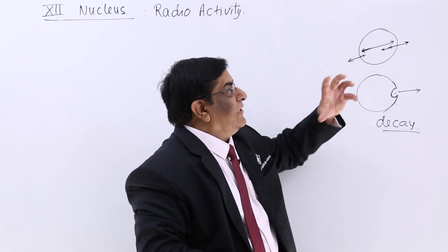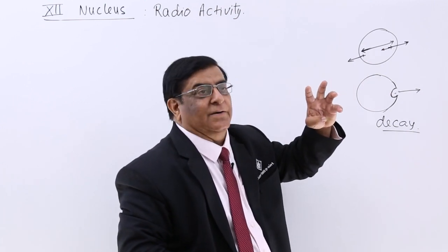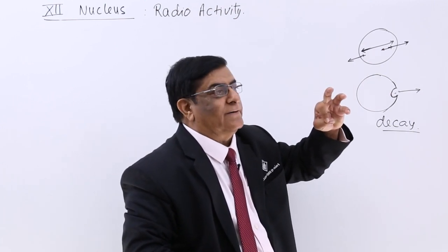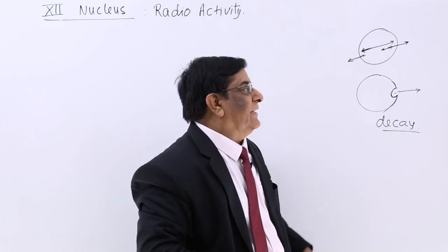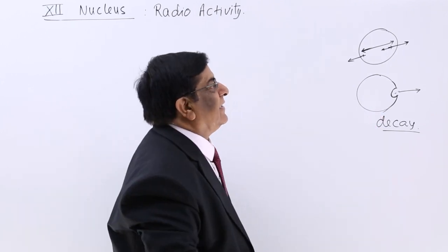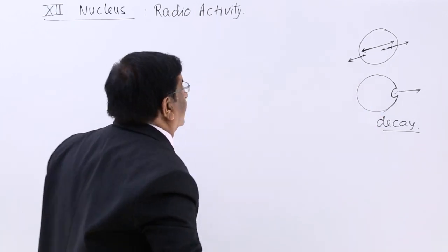The large nucleus becomes smaller and smaller. Therefore we call this a process of decay. There is a decay, and there are three types of decay.